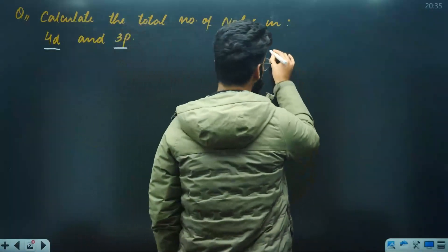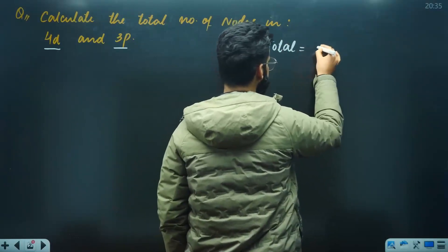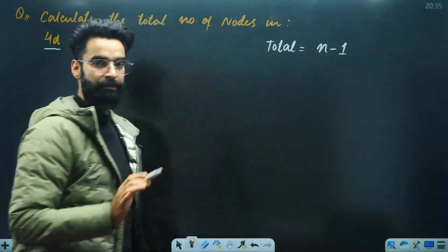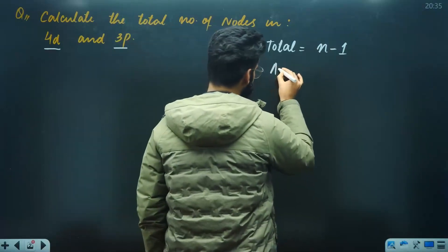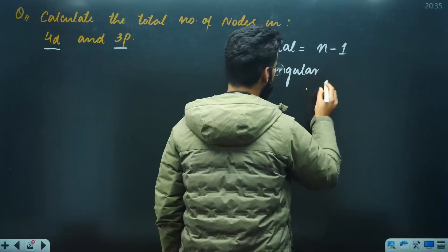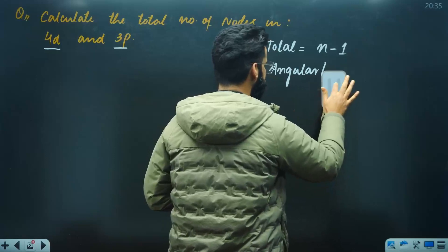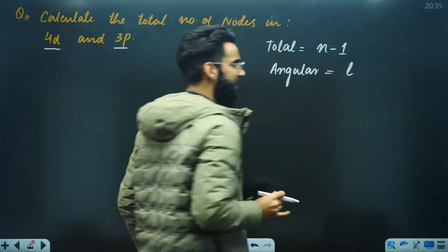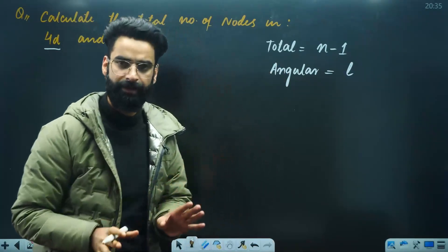First of all, I'll tell you a formula. When you ask the total number of nodes, the formula is n-1, where n is the principal quantum number. If you're asked to calculate the angular nodes, the formula is equal to L. It means whatever the orbital or azimuthal quantum number equals L, that gives you the number of angular nodes.